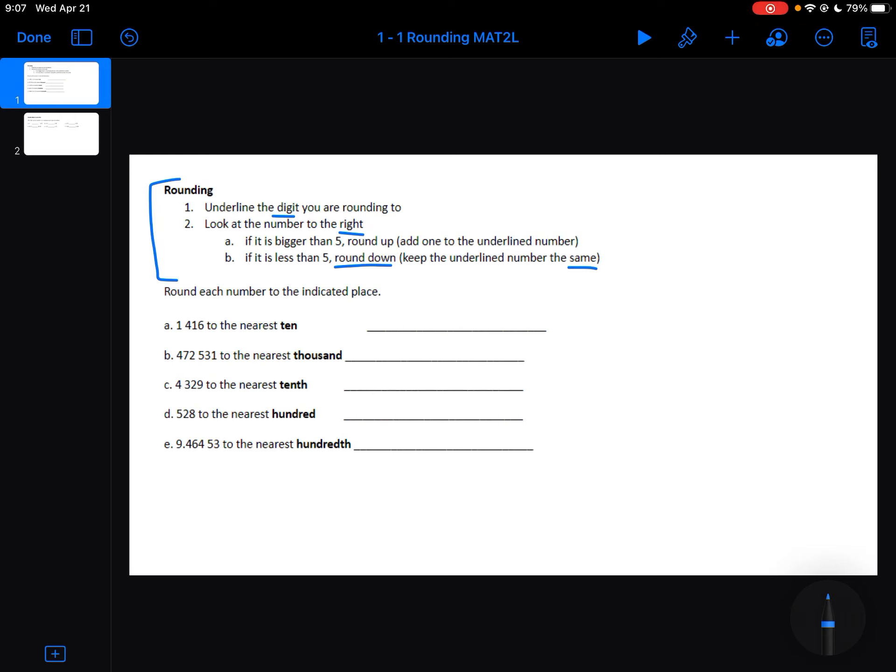So whenever you're thinking about rounding, it's almost like you're thinking about a hill. So if I draw a number line here, 0 to 10, anything that is on this side is rounding up. Anything that is on this side is staying the same.